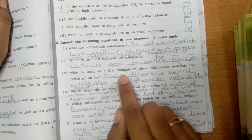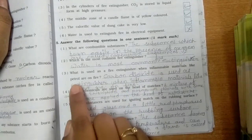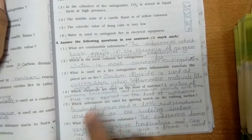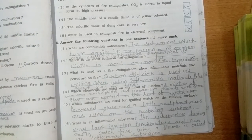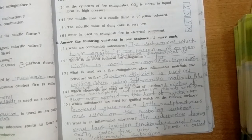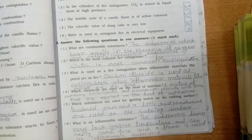Third, what is used as the fire extinguisher when inflammable materials like petrol are on fire? Carbon dioxide. This is the most common fire extinguisher which is used for inflammable materials like petrol.